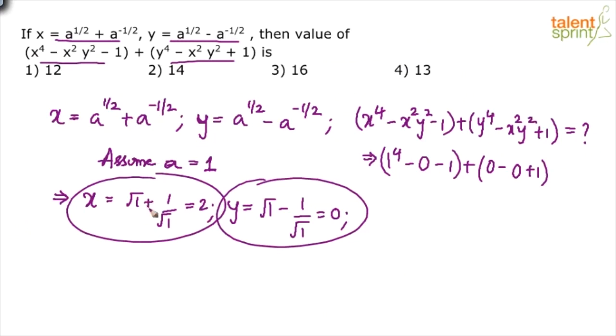Root 1 plus 1 by root 1 is 2. I took it as 1. So this is 2, x equals 2 and y equals 0. So this will be 2 power 4. How much is this? 16 minus 1 plus 1 comes out to be 16. That's your answer, option 3.